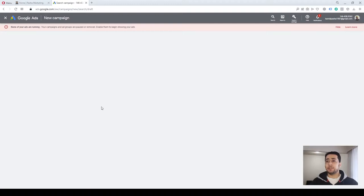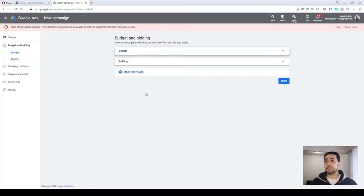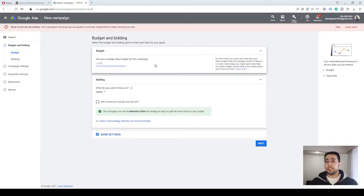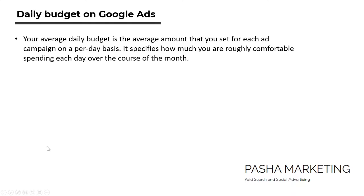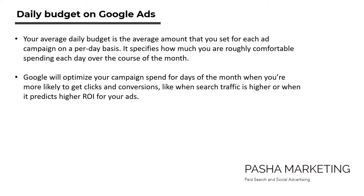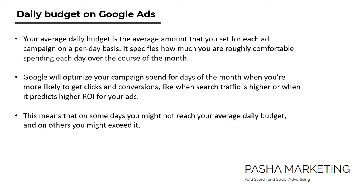After you press Continue, you must select your budget and bidding strategy. Budget is the average daily budget that you want to spend for your campaign. Your average daily budget is the average amount you set for your ad campaign on a per-day basis — it specifies how much you are roughly comfortable spending each day over the course of the month. Google will optimize your campaign spend for days when you are more likely to get clicks and conversions, like when search traffic is higher or when it predicts higher ROI for your ads. This means on some days you might not reach your average daily budget, while on other days you might exceed it.